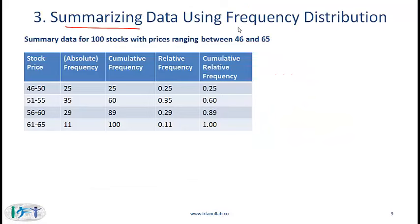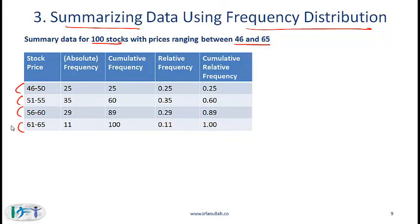Summarizing data using frequency distributions: suppose we have 100 stocks with prices ranging between 46 and 65. We divide the price range into four intervals of 5 each and count how many stocks fall within each interval. Twenty-five stocks fall in the 46–50 interval, 35 in the 51–55 interval, and so on. This count is called the absolute frequency — it tells us how many stocks appear in each interval.